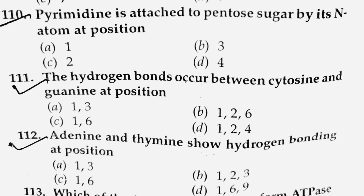Next question: Pyrimidine is attached to pentose sugar by its N atom at which position — position 1, 3, 2, or 4? The answer is position 1 — the first position.